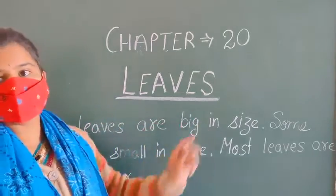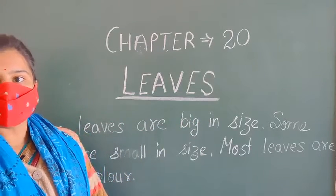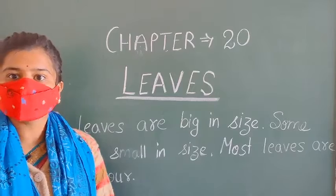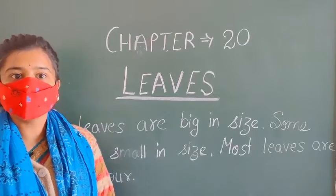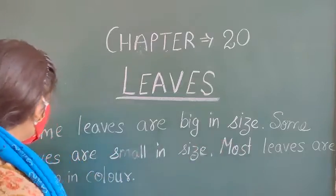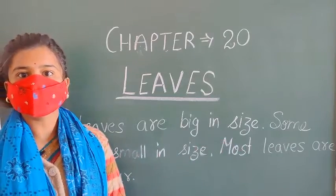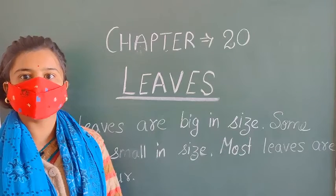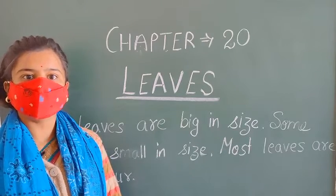Some leaves are big. Kuch pattiyan kaisi hoti hain? Andar se badi hoti hain. Some leaves are small. Aur kuch pattiyan kaisi hoti hain? Andar se choti hoti hain. Most leaves are green in color. Aur kuch pattiyan kaise rang ki hoti hain? Hara hota hai. Aapne apne aaspaas dekha hoga ki kuch pattiyan hare rang ki hoti hain.